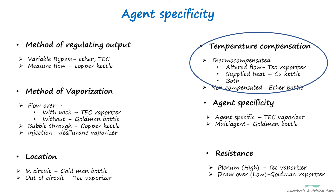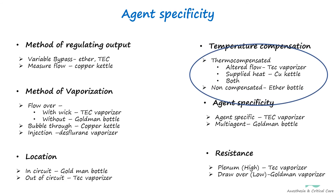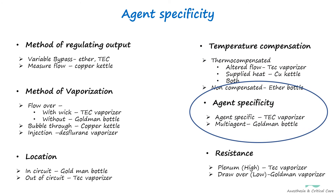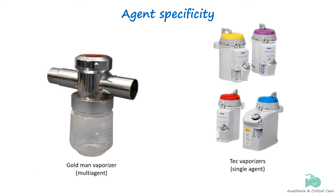Vaporizers can also be classified based on whether they can be used for multiple anesthetic agents or for just a single agent. Older vaporizers like Goldman vaporizers were multi-agent. Modern vaporizers like the TEC series are specifically customized based on individual agents' chemical properties such as saturated vapor pressure, boiling point, and minimum alveolar concentration — so they are agent-specific.